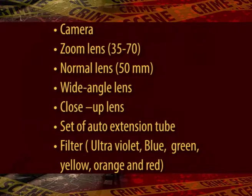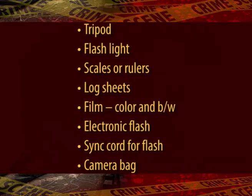Now we shall study about the photography kit. A photographic kit can contain the following basic equipment: camera; zoom lens 35-70mm; normal lens 50mm; wide angle lens; close-up lens; set of auto extension tubes; filters — ultraviolet, blue-green, yellow, orange or red; tripod; flashlight; scales; locksheets; film — color and black and white; electronic flashes; synchronized cord for flash; and a camera bag.